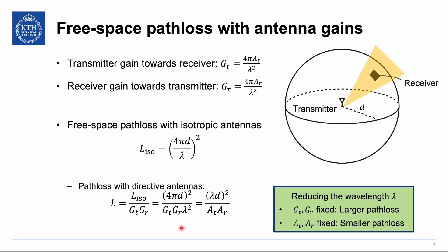The path loss expression depends on wavelength. If we reduce the wavelength (increase frequency) while keeping antenna gains fixed, the smaller wavelength means larger path loss — worse channel quality. However, if we keep antenna areas fixed when changing wavelength, the gains increase as wavelength shrinks, meaning path loss actually decreases at higher frequencies. So any study of channel quality must jointly consider the propagation channel, antennas, and wavelength.